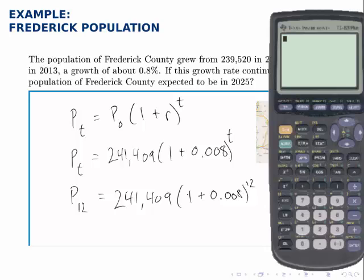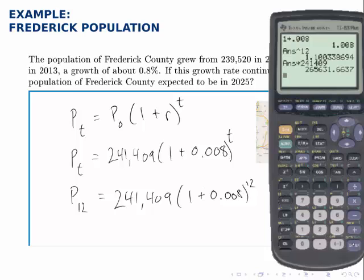On the calculator, I'm going to start by calculating what's inside the parentheses: 1 plus 0.008, then raise that to the 12th power, and then multiply that by 241,409. I'm careful to observe order of operations — what was inside the parentheses first, then raise to the exponent, then multiply to get the final answer. This model predicts that in the year 2025, the population of Frederick County will be about 265,600.